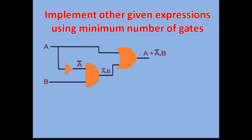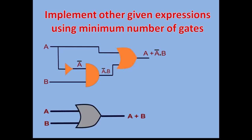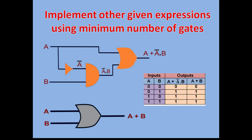The second part is implementing given expressions using the minimum number of gates. We have the expression A OR (A-bar AND B), whose logic diagram requires three gates: a NOT gate, an AND gate, and an OR gate. We can reduce this expression — the PDF is linked in the description — and what we get is that a single gate can do what those three gates are doing.